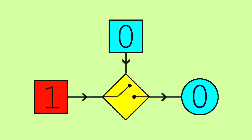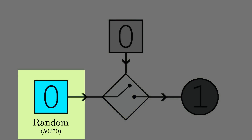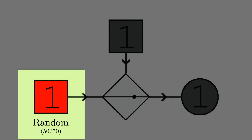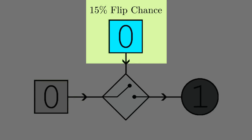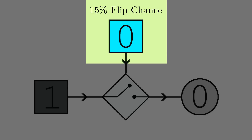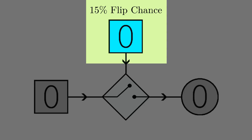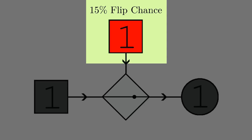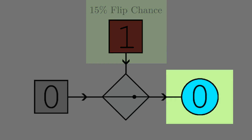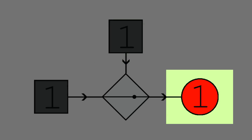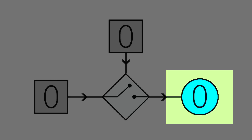In the more percussion-oriented example, on the other hand, I had the bit line sonifying a random bit stream using single, double, and triple strokes on two cowbells. The word line, just as in the piano music, uses a random stream with a 15% chance of flipping. It performs a sustained roll on the timpani whenever the transistor is switched on, and a low single stroke whenever it's switched off. Finally, the capacitor alternates between repeated staccato G's on a value of zero, and a crunchy held minor second on a value of one.